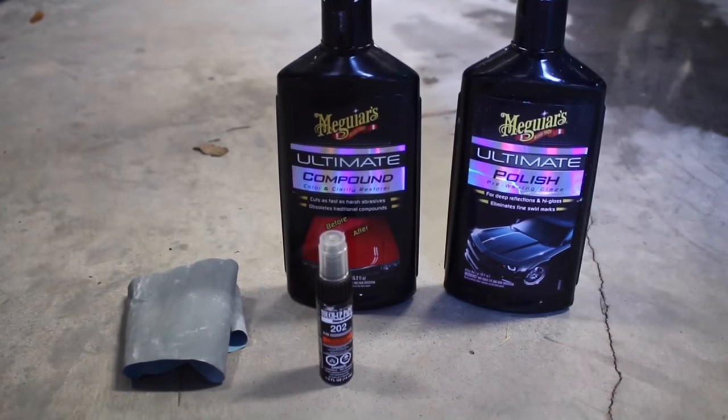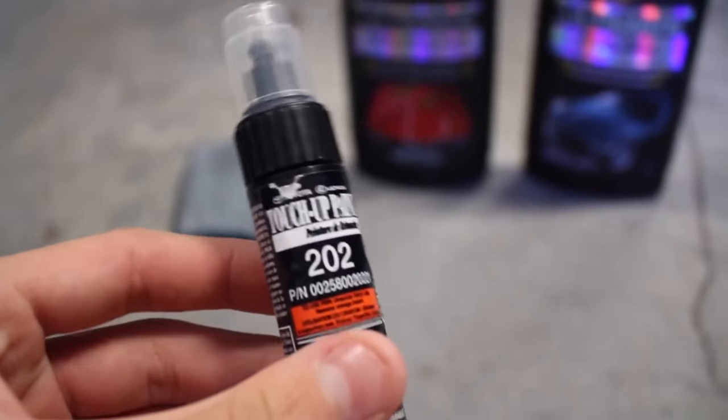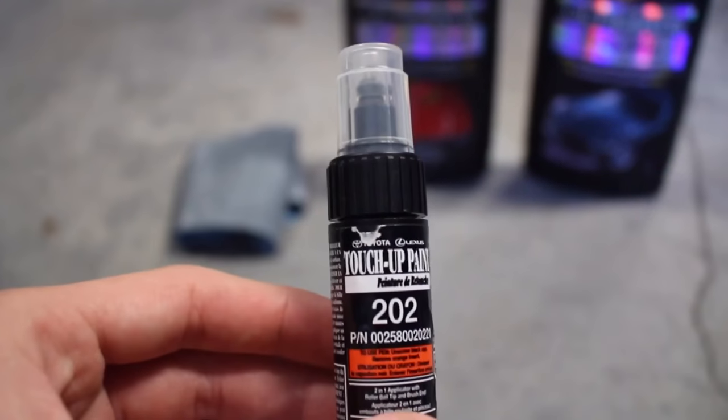In order to apply touch-up paint onto your car, you're going to need a few things. In my case, I'm going to be using Toyota specific color match touch-up paint, and you need to make sure that the touch-up paint is the exact same color as your car's paint, or else it won't look right.